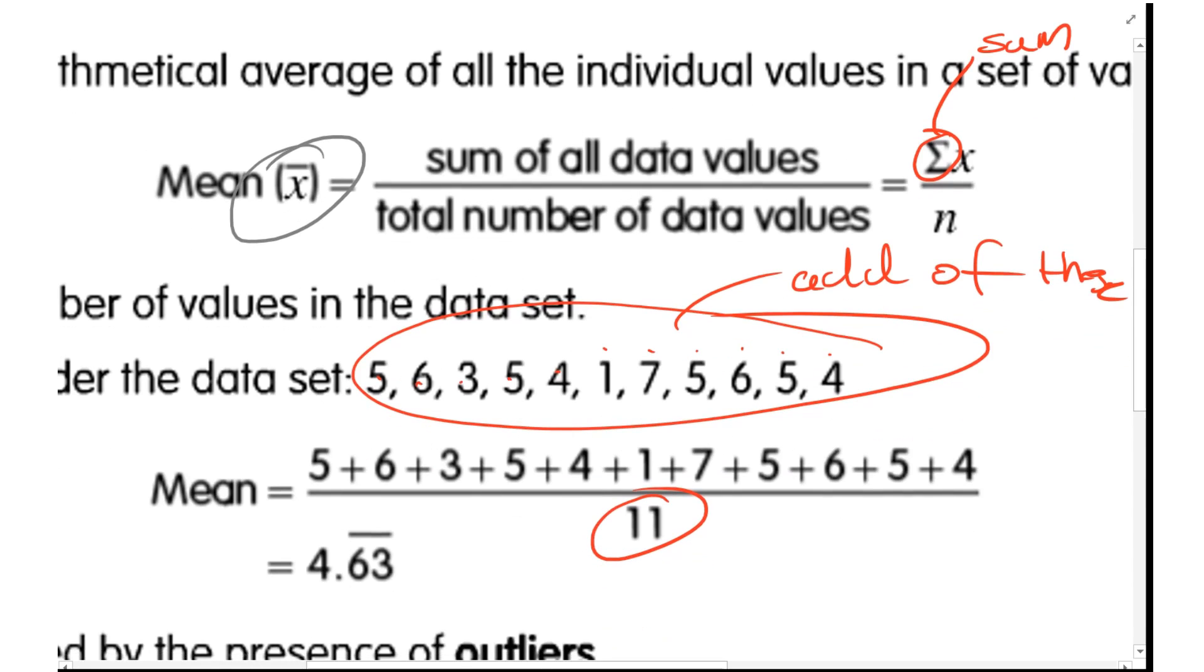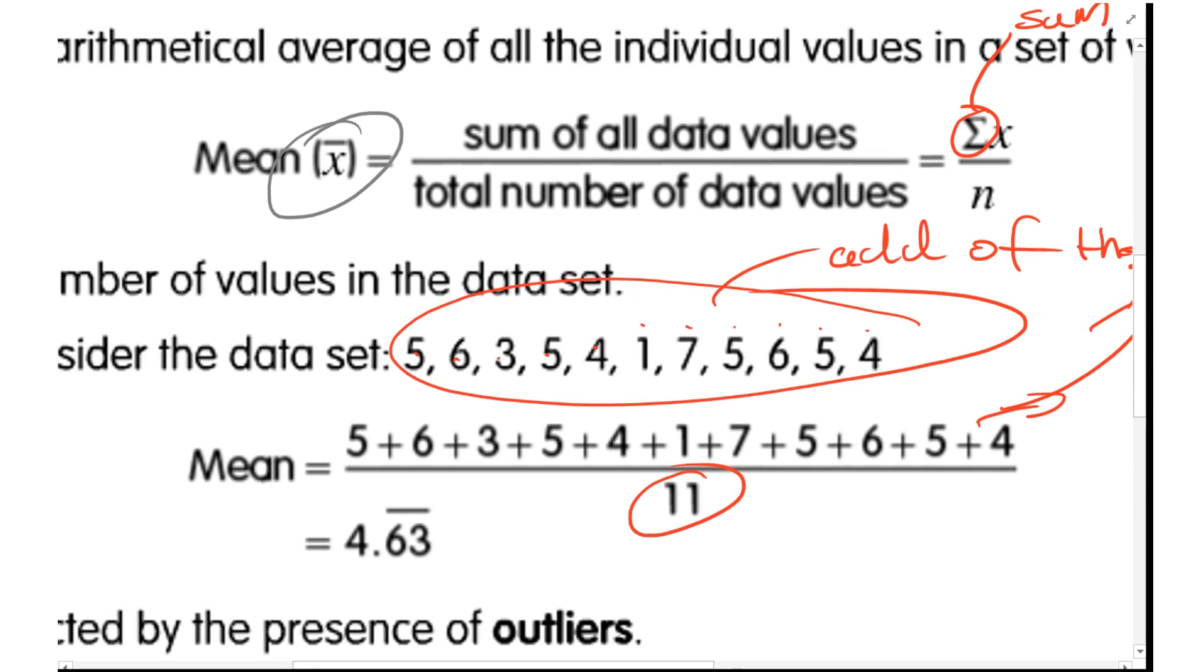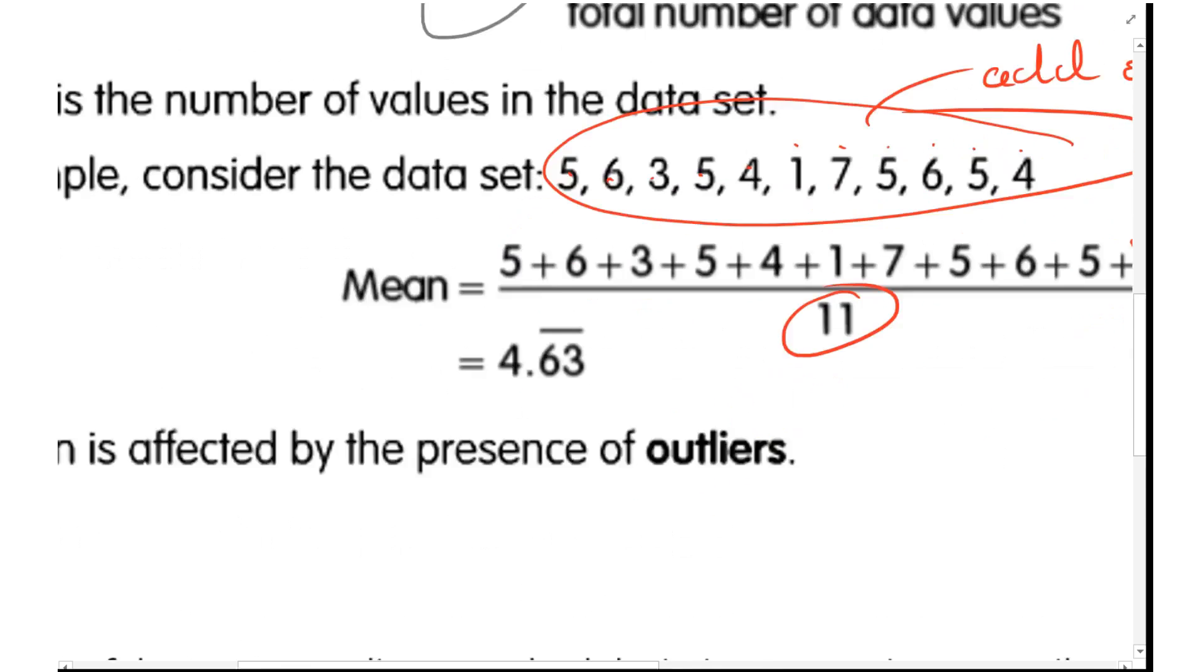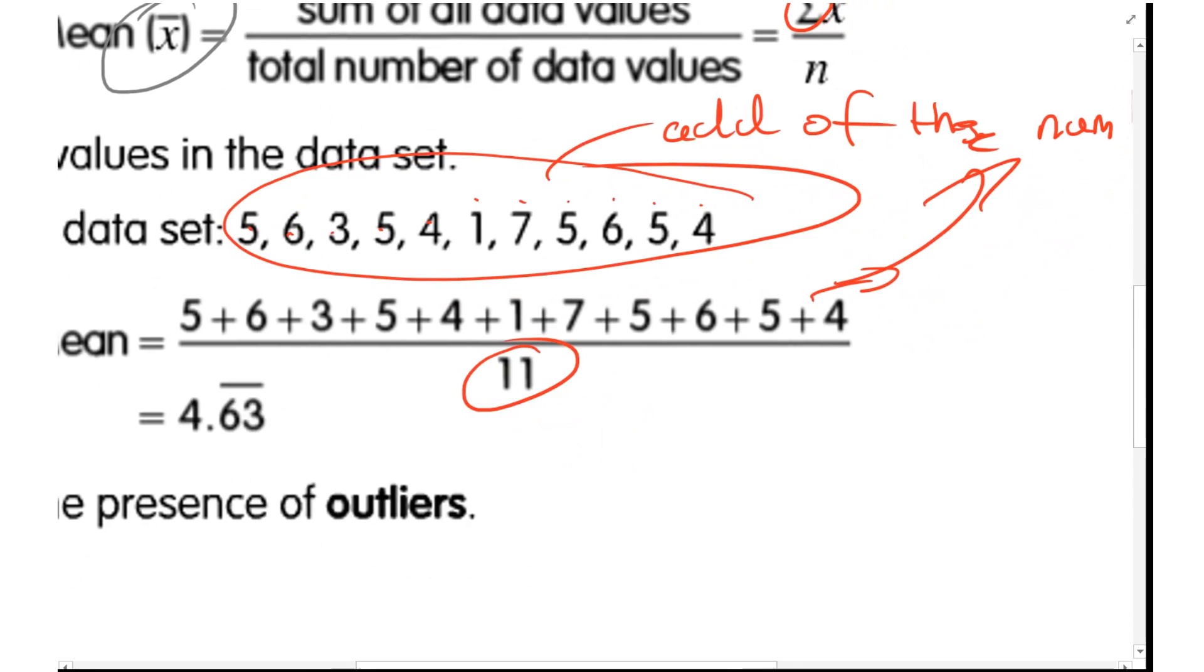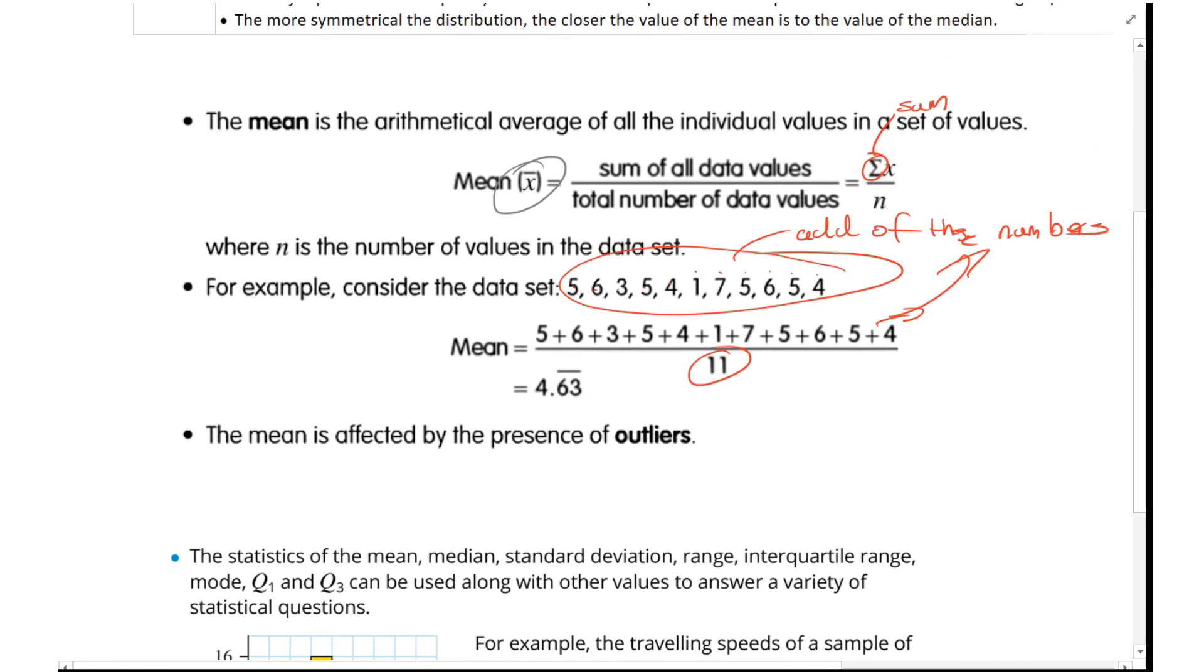You can add them all up and divide by 11. The calculator will do this for you, but if it's a simple one you can do it yourself. Now here's a key point, a bit of a kicker.